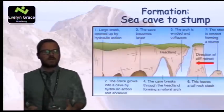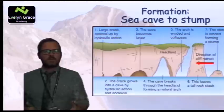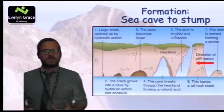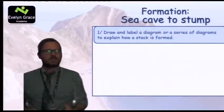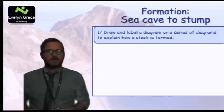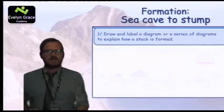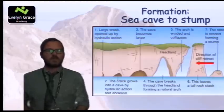In stage six, what you end up with is a tall rock stack, which itself will eventually be eroded down to a stump. Now I'd like you to pause the video and draw and label the series of diagrams to explain how a stack is formed. Have a go at that and see how you get on. Your diagram should have the seven stages — hopefully it looks something like this. Practice that diagram because it's really going to help you when it comes to doing the GCSEs.